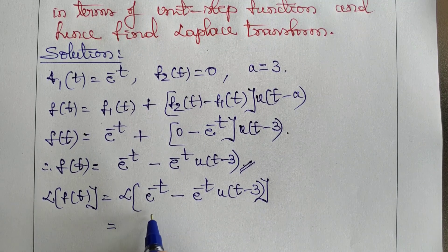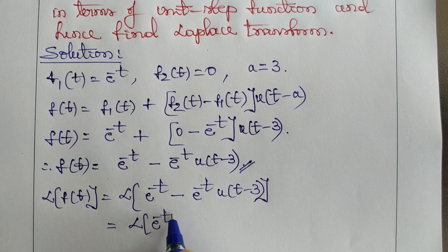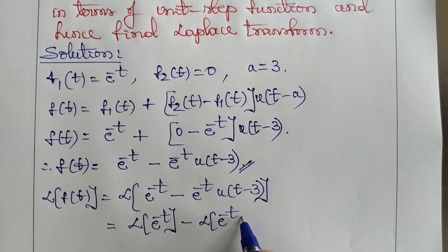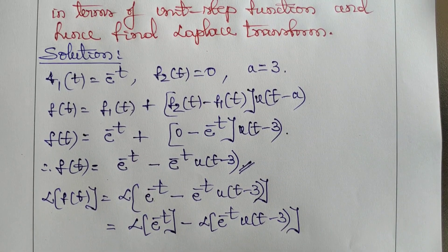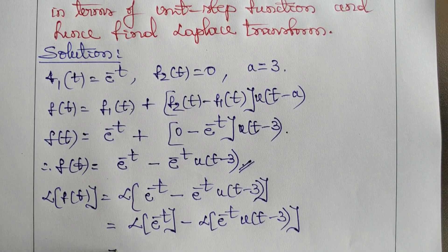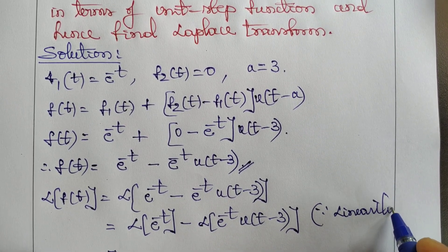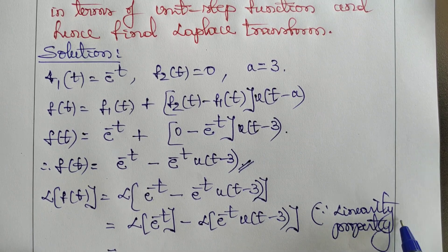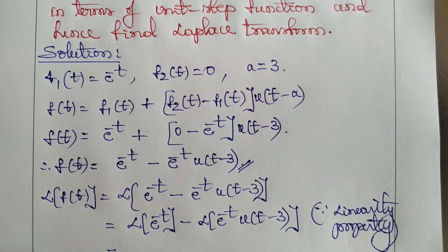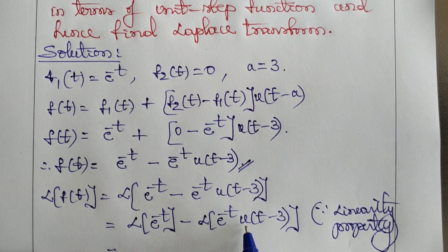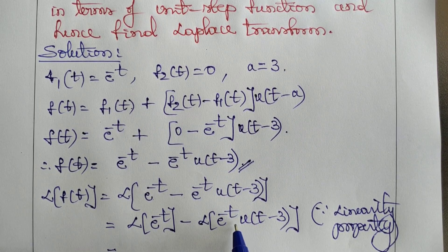Now taking the Laplace transform: L{f(t)} = L{e^(-t) - e^(-t)·u(t - 3)}. Applying the linearity property, this equals L{e^(-t)} minus L{e^(-t)·u(t - 3)}. We observe that e^(-t)·u(t - 3) involves u(t - 3), so the term e^(-t) must be treated as f(t - 3).